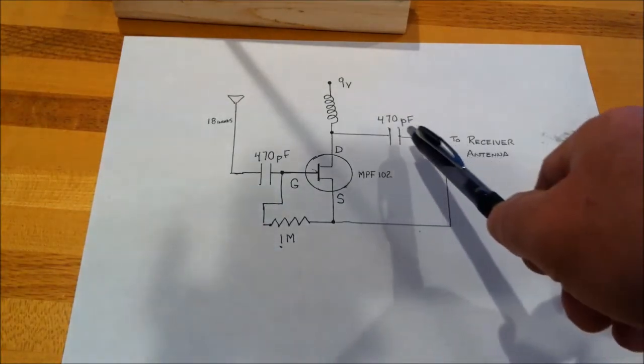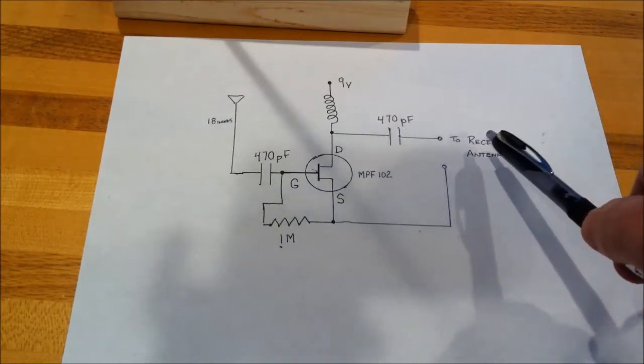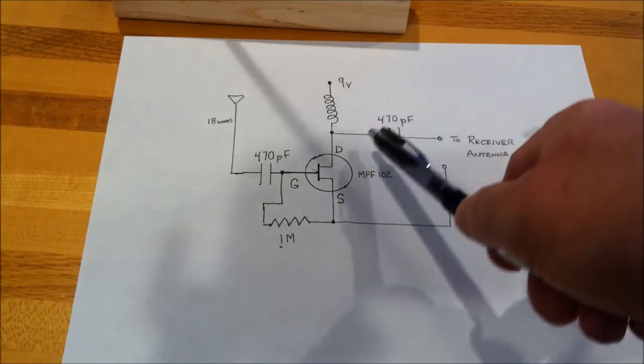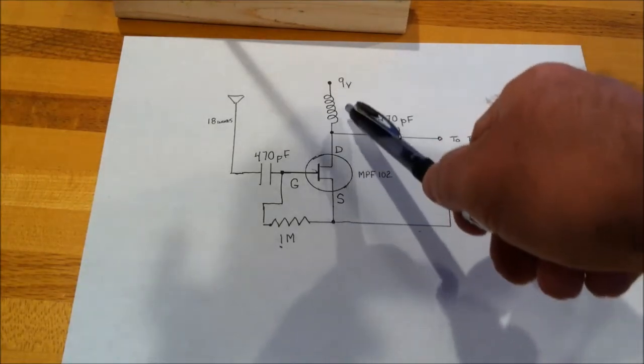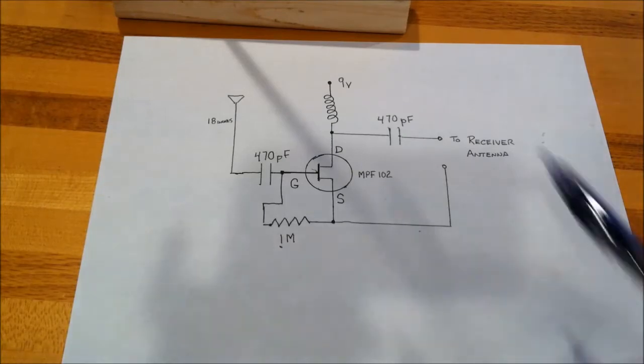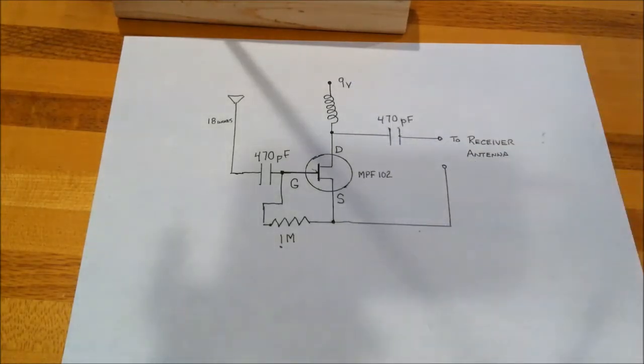And of course, on the output of this capacitor, you go to the receiver antenna of the radio that you're trying to boost. And you also have to select a choke here that helps work the system properly at the radio frequency range of AM radio and attach that to a 9-volt battery.